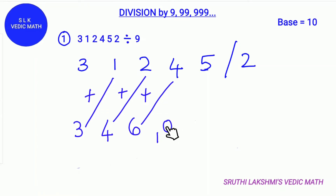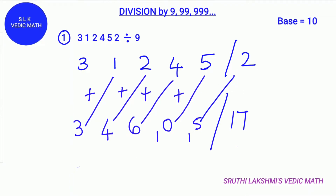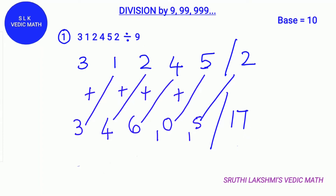We write down the zero and carry the 1. Then add 10 plus 5 which gives us 15. Write down the 5 and carry the 1. After that write 15 plus 2 which gives us 17. Write down the remainder stroke and write 17. The remainder can't be bigger than the divisor 9, so find out how many 9's can fit in 17. One 9 can fit in 17.